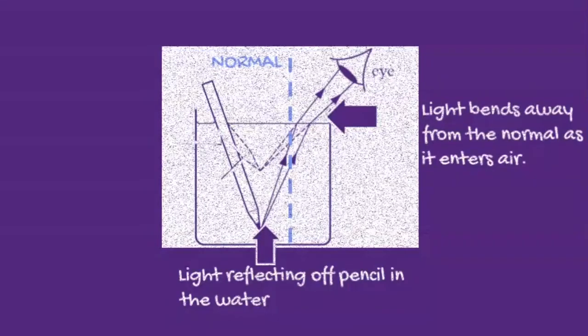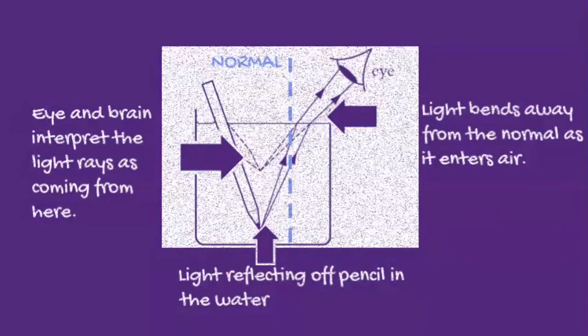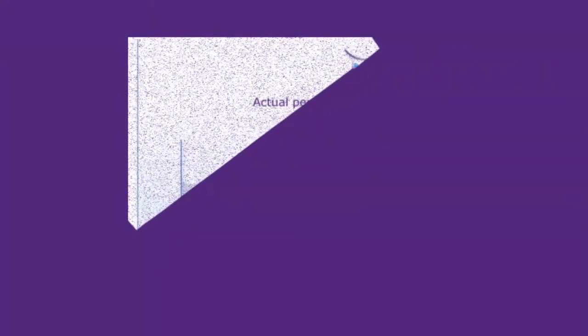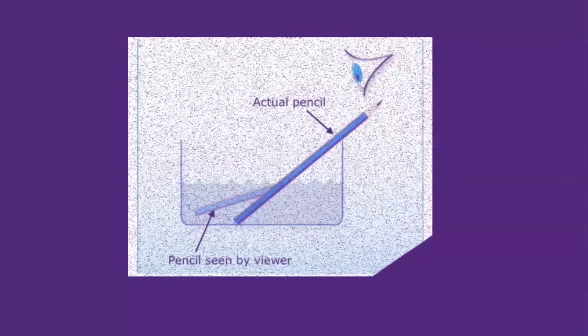But the brain interprets the location of objects based on the angle that the rays enter the eye. So it will extrapolate backwards, and our brain thinks the light is coming from a different location. This is why the pencil looks broken — the brain is interpreting light rays coming at us from different angles.